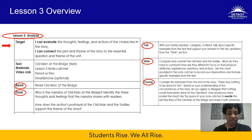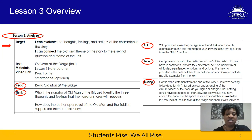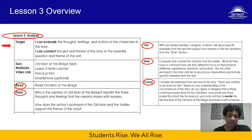Lesson three overview — we are analyzing today. Your targets: I can evaluate the thoughts, feelings, and actions of the characters in the story — not just observing anymore. I can connect the plot and theme of the story to the essential question and the theme of the unit, knowing they're linked but may not be exactly the same. You're going to reread 'Old Man at the Bridge' and think through these questions.